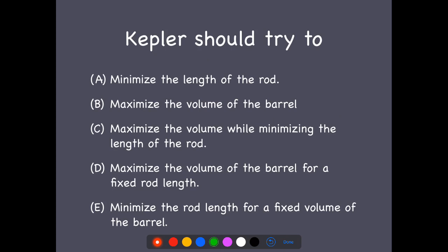We want to maybe minimize the length of the rod so that the price is the lowest, maximize the volume of the barrel. Clearly, those on their own, we're going to get a variable amount of wine or a variable price. So those are sort of a little bit vague.